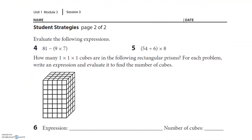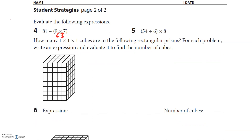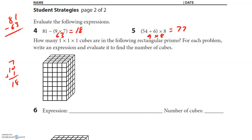Evaluate the following expressions — evaluate means you're basically going to solve them and make them equations. There are parentheses around 9 times 7, so 9 times 7 is 63, and then 81 minus 63: I'll add up — add 7 to get 70, add 10 to get 80, add 1 to get 81 — that's 18 added, so the answer is 18. For number 5: 54 divided by 6 is 9, and 9 times 8 equals 72.